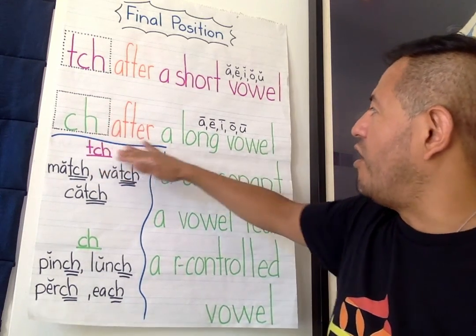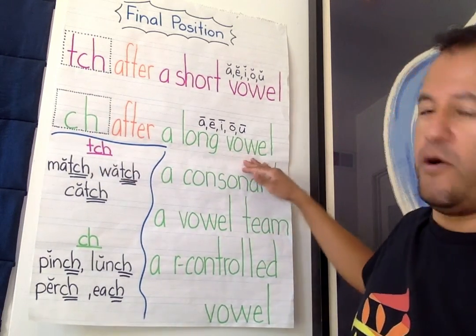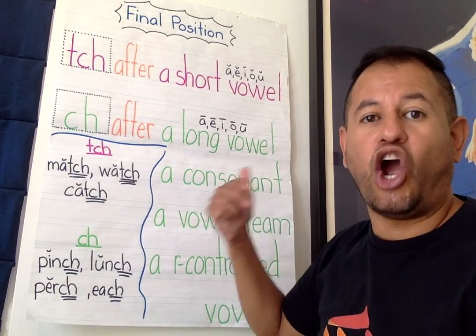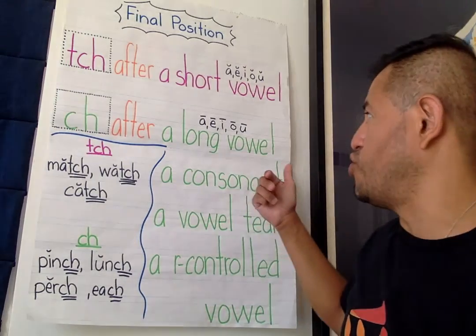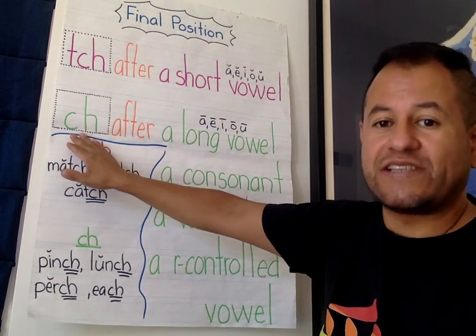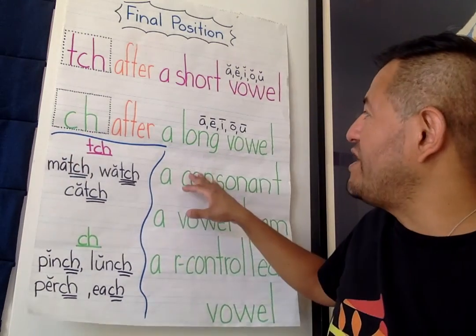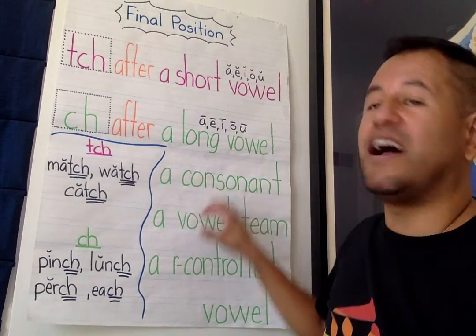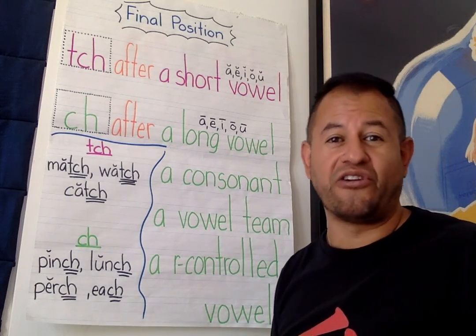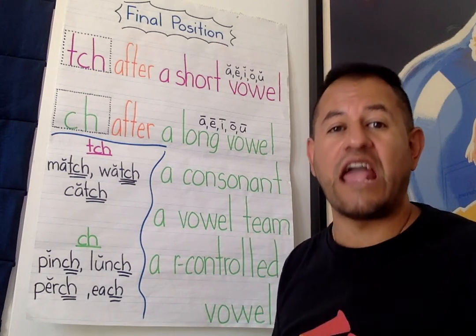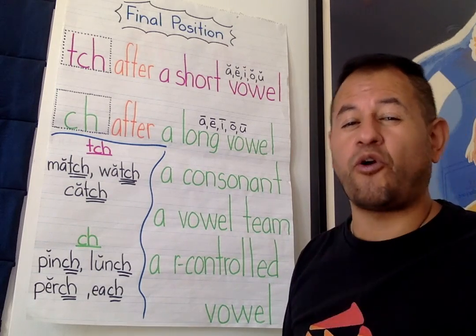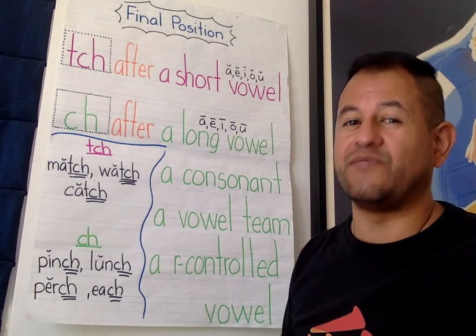If we hear a long vowel sound — that's a vowel that says its name: A, E, I, O, U — before our "ch," it's going to be just C-H. If we hear a consonant sound — a consonant is any other letter in our alphabet that is not a vowel — if that sound comes before our "ch," it's also going to be C-H.